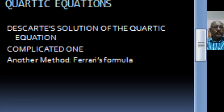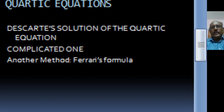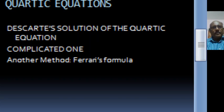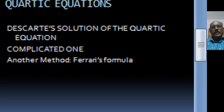Now when n equal to 4, the polynomial of degree 4 is known as the quartic polynomial and the equation is known as the quartic equation. There also, there is a formula to find all 4 roots of this quartic equation. The method is Descartes' solution of the quartic equation — it is a very complicated one. There is also another method known as Ferrari's formula. Using this formula, we can find all 4 roots of the quartic equations using the coefficients and using the operations: addition, subtraction, multiplication, division, and extraction of roots.